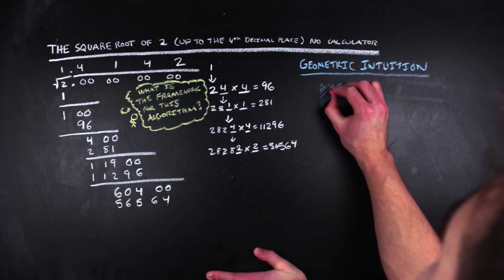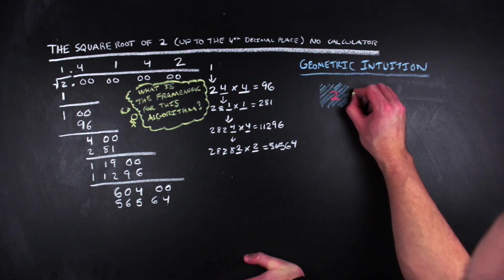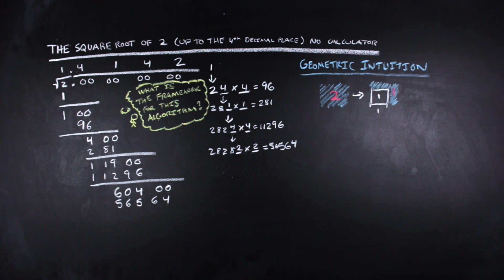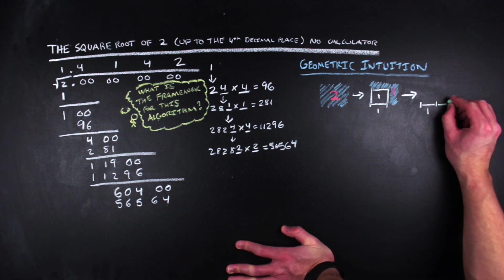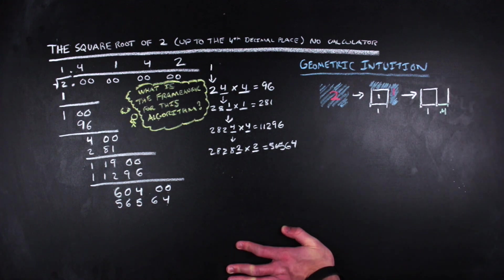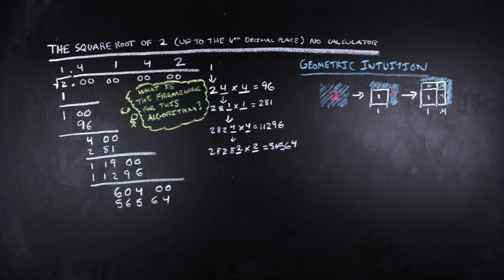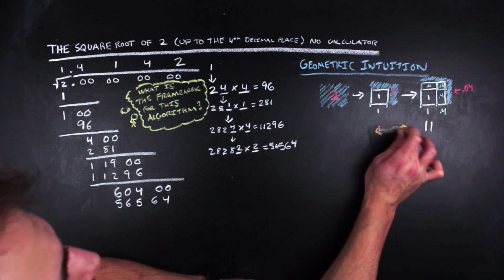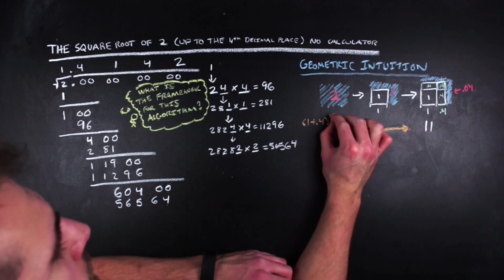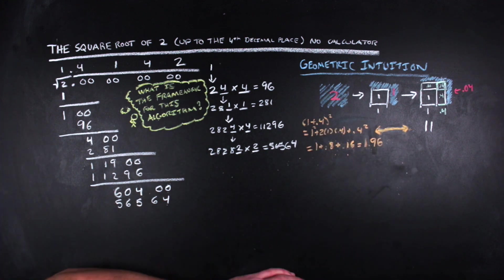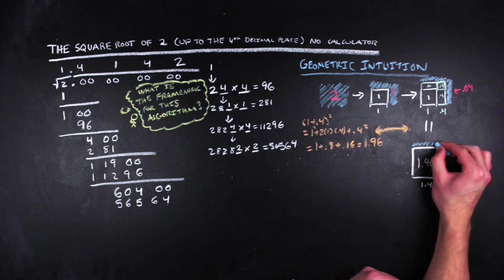So for an area of two, we start with a side length of one as two would be too big. A side length of one gives us a measured area of one and an unmeasured area of one. Now we're on to the tenths. Adding on a length of 0.4 generates three new regions of measured area: two that are one by 0.4 and one that is a 0.4 by 0.4 square. We can see this by doing the binomial expansion on 1 plus 0.4 without combining one and 0.4 to yield 1 plus 2 times 1 times 0.4 plus 0.4 squared. After simplifying, we have a measured area of 1.96 and an unmeasured area of 0.04.